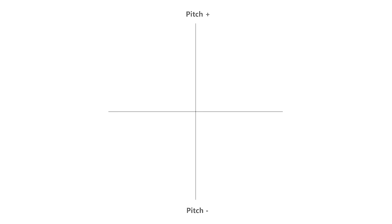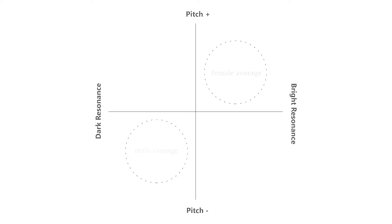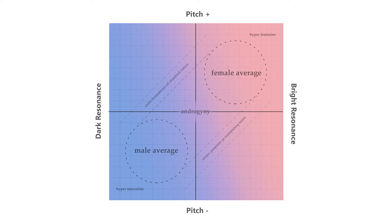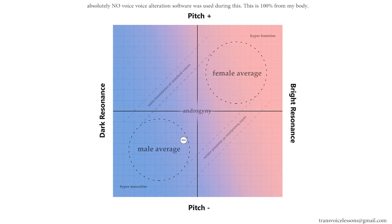The way I like to think about this is with a simple x and y graph. On this graph, the y-axis represents pitch from high to low, and the x-axis will represent resonance from dark to bright. So sit back and I'm going to show your ear the difference between resonance and pitch once and for all. Wherever I drag the indicator, that's the sound I'll do my best to make.